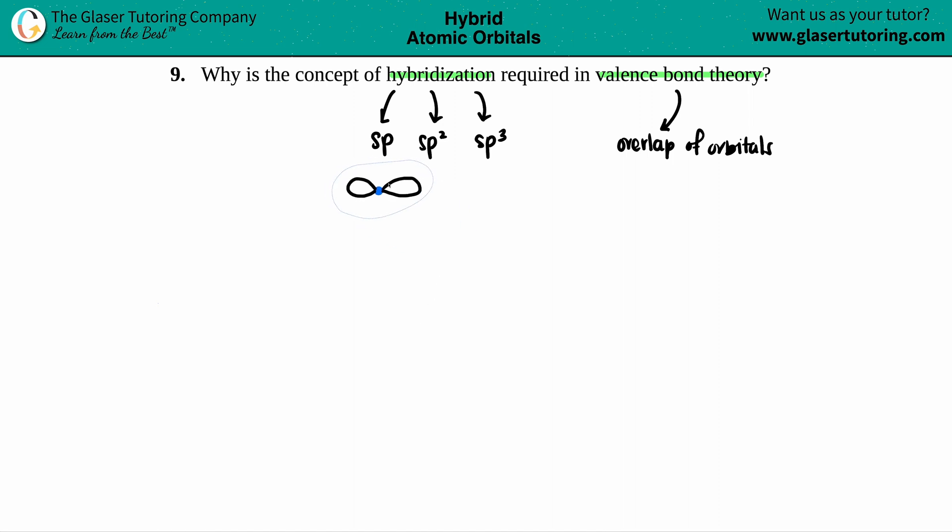So what they tell you is what specific orbitals are doing the overlapping. So hybridization is required because with hybridization, you get two things. You get the specific orbitals that are overlapping, whether it's an s, whether it's a p, whether it's a d,